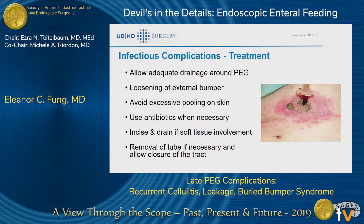In terms of treatment, really allow adequate drainage around the PEG tube and loosen the external bumper. You don't want secretions pooling around the skin, as that will make things worse. Use antibiotics if necessary. In this patient you can see there's necrotic skin around it, so this would be one where we might have to incise and drain some of the soft tissue. In some cases you actually have to remove the tube and allow closure of the tract, and down the road you might need to replace the tube.